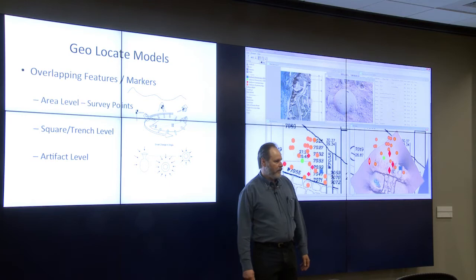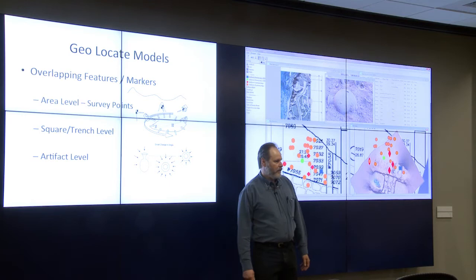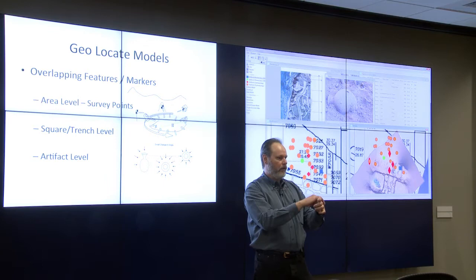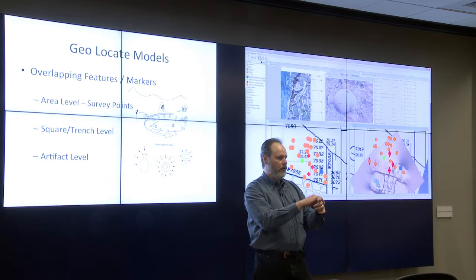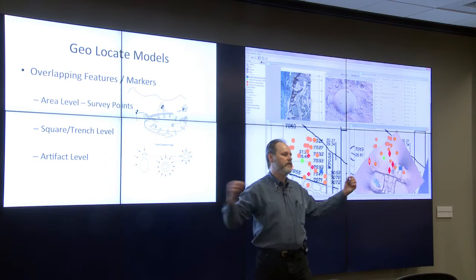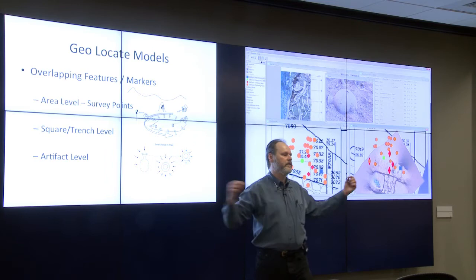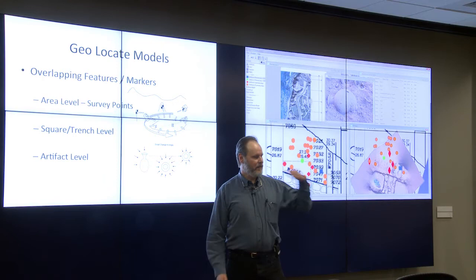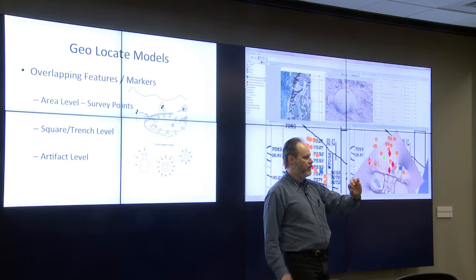For geolocating, you have survey points on the large area and build a quick model of the overall space, then take the excavation area and build a model of that and align it with the larger model. When you find an artifact, you build a model of that with overlapping points from the excavation area and align it relative to that. The end result is alignment tied back to the overall site. We recommend using tags, flags, or ping pong balls in both models to give clear alignment points.